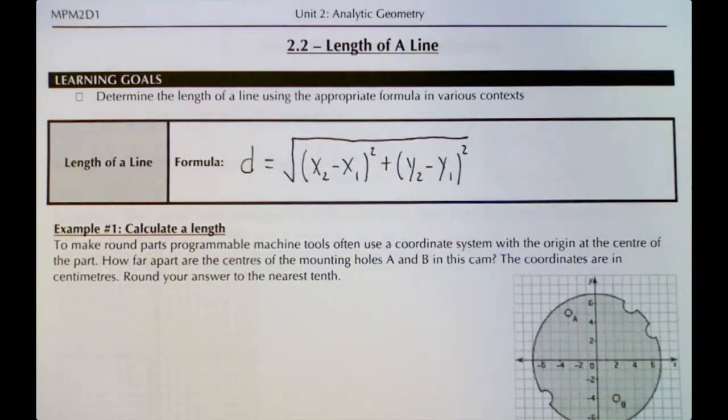This distance formula is derived from the Pythagorean theorem, which is the a² + b² = c² equation. We'll get into that a little bit in class as to where that comes from, but for the purpose of this video I'm just going to show you how to use the formula to calculate the distance.